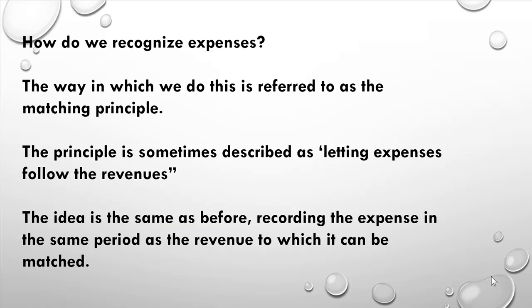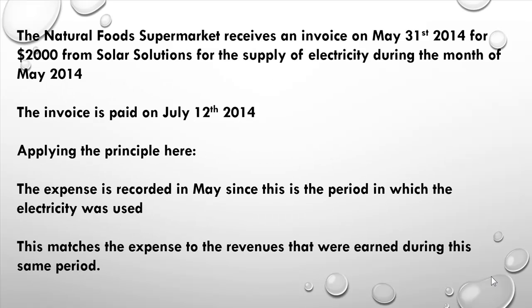How do we recognize expenses? We use what's called the matching principle — sometimes described as letting the expenses follow the revenues. The idea is that you record the expense in the same period as the revenue to which it can be matched. For example, a supermarket receives an invoice on the last day of May for $2,000 for electricity supply during the month of May.